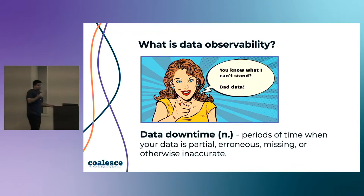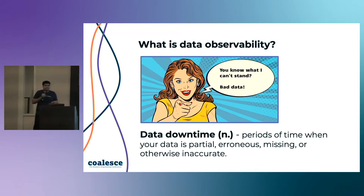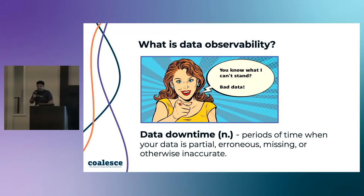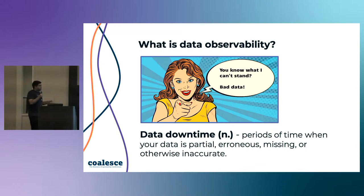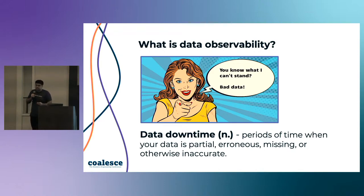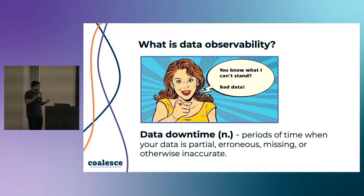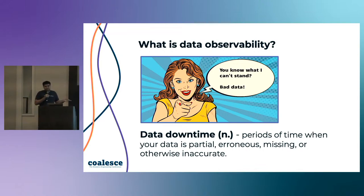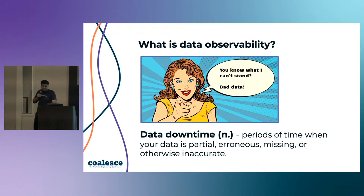Introducing the concept of data observability — but first, let me reintroduce data downtime: periods of time when your data is partial, erroneous, missing, or otherwise inaccurate. As your data system becomes more complex, you have endless sources, consumers, and producers. For engineers, data downtime means wasted time and resources. For consumers, it erodes trust — and you can't make decisions on data you can't trust. Data observability tries to answer this: it's an organization's ability to fully understand the health of the data in their system, eliminating data downtime by applying best practices learned from DevOps and application pipeline observability.